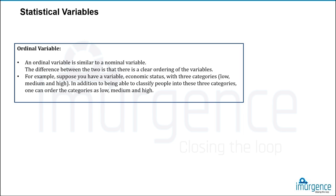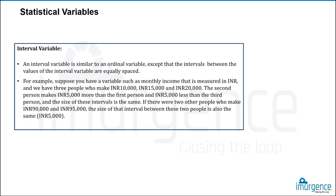Ordinal variables are similar to nominal variables but have a higher-to-lower or lower-to-higher sequence — that's why they're called ordinal. They must have more than two levels; if only two levels exist, the variable is binary. Interval variables are similar to ordinal variables except that they don't have an absolute zero.